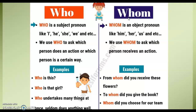Let's look at whom. Whom is an object pronoun, like him, her, us, and so on. We use whom to ask which person receives an action. Whom虽然他也是谁，可是呢，他和who不一样。Who，我们通常放在句子的最前面，因为它是主语，它用来代替主语。可是whom，它是用来代替object，包括了him，her，还有us。